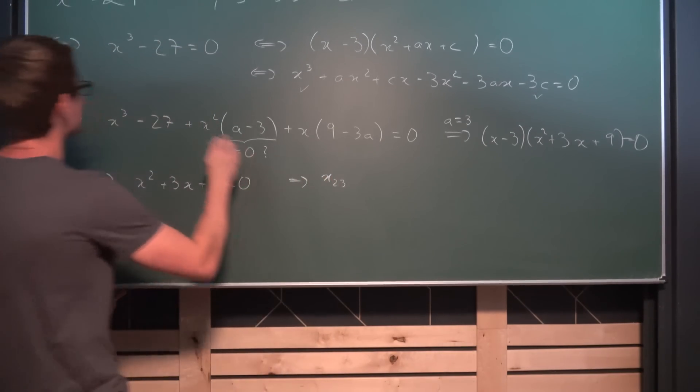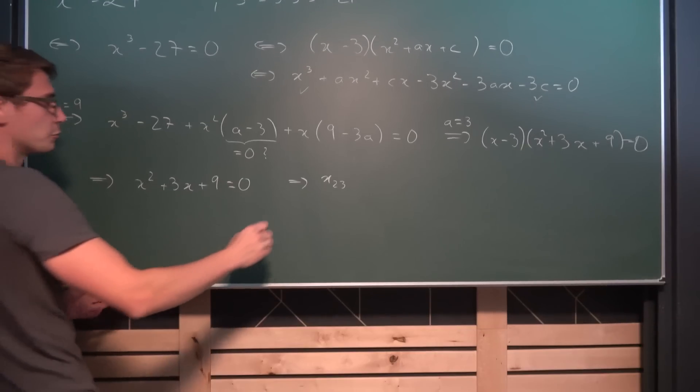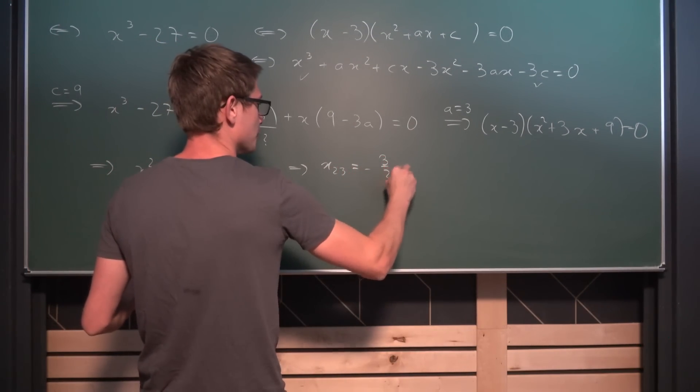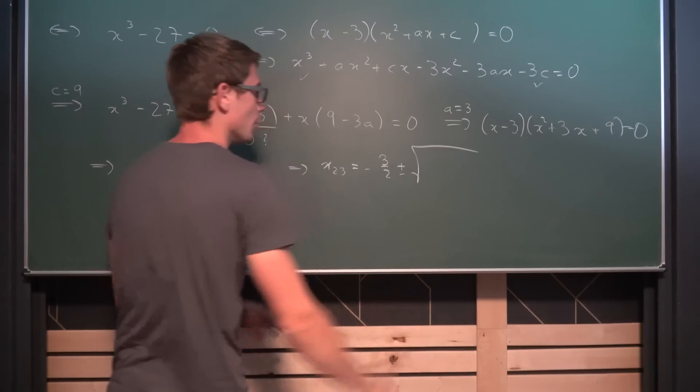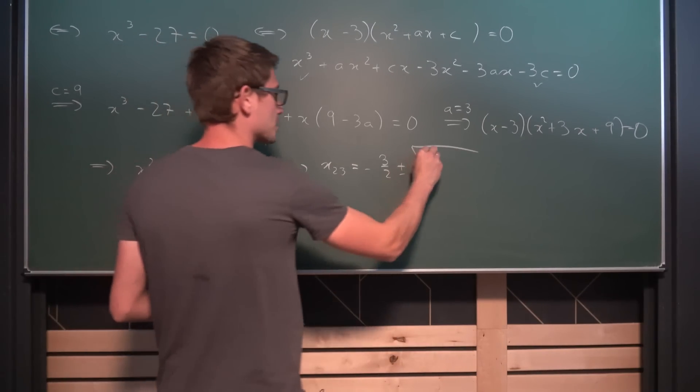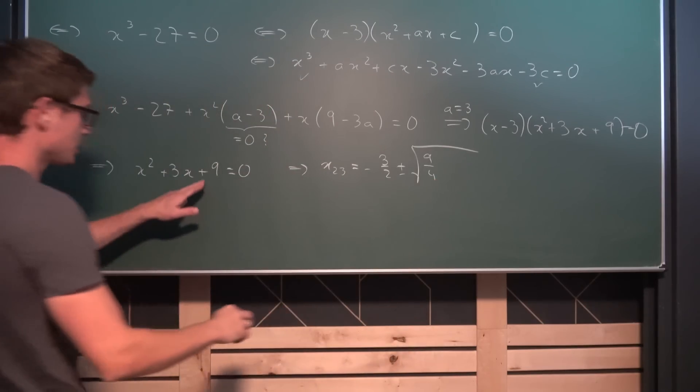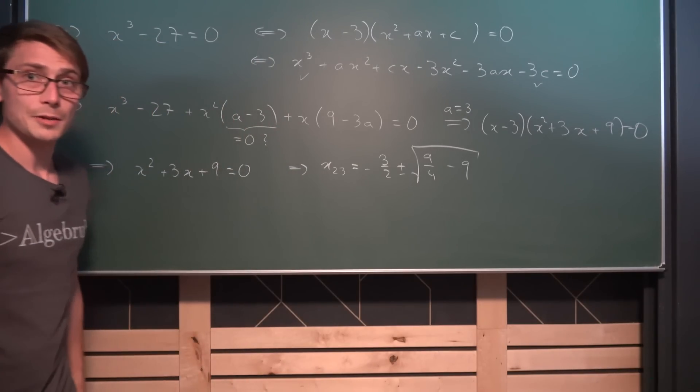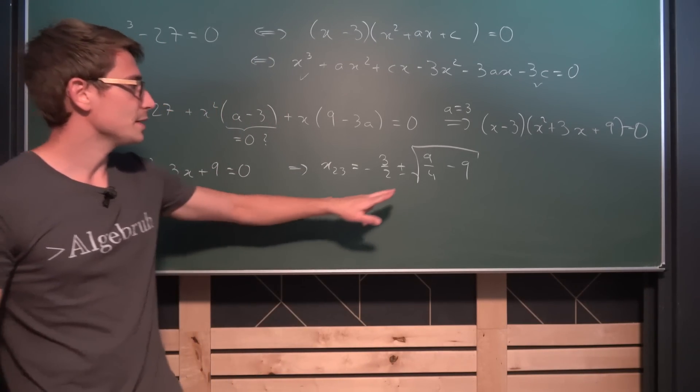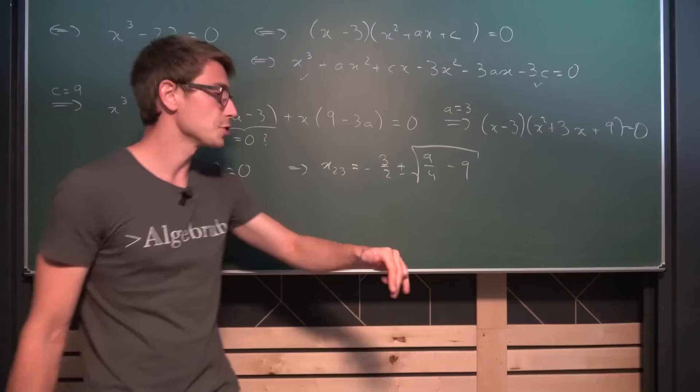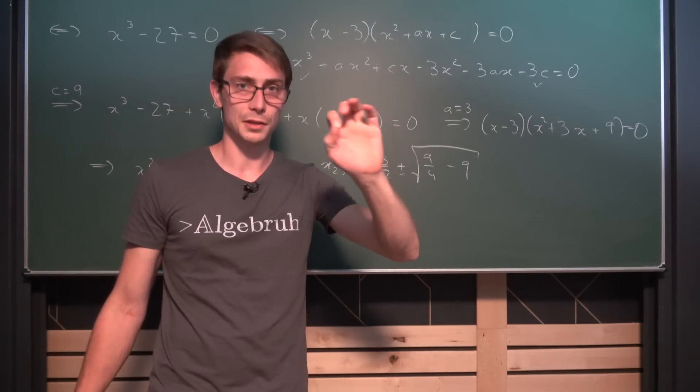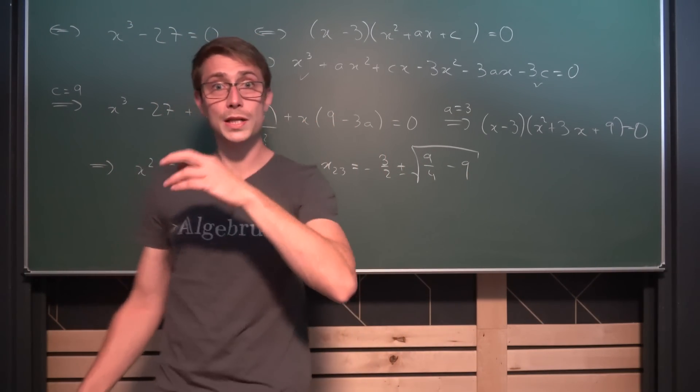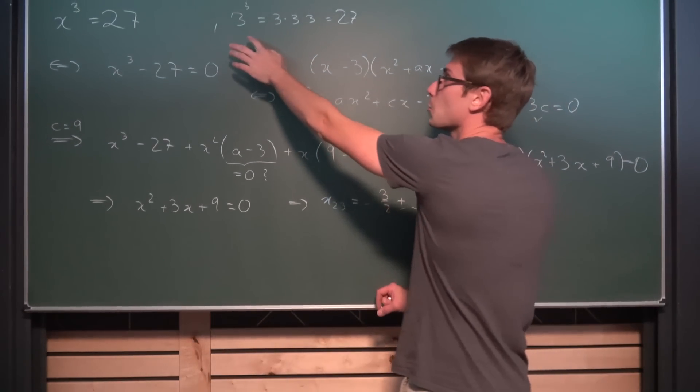x2 and x3 in this case, because this right here was x1, is going to be negative 3 over 2 plus or minus the square root of 3 over 2 squared which is going to be 9 over 4, and then we are going to have negative 9. Now you could let it be but you are probably seeing a problem here, namely 9 over 4 is something around 2, minus 9 is gonna give us a negative number. Square root of a negative number is not going to yield a real solution, hence why 3 is the only real solution here. But we are going to get two imaginary solutions out, complex solutions.